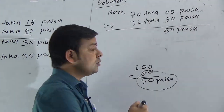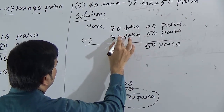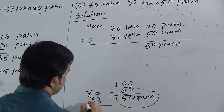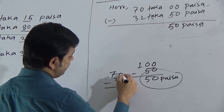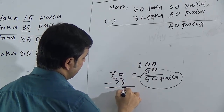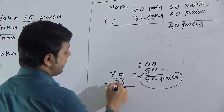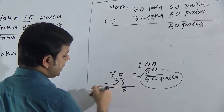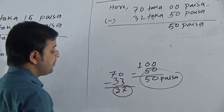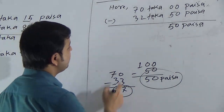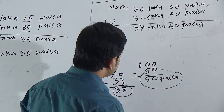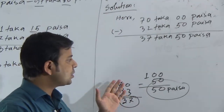As I have taken 1 taka as loan, I have to give that 1 with this 2, making it 33. We have to subtract 33 from 70. Subtract 3 from 0 — not possible, so take 1 as loan: this becomes 10. Subtract 3, you get 7. Now give that 1 with 3, making it 4. Subtract 4 from 7, you get 3. So we get 37 taka.